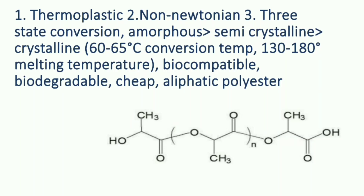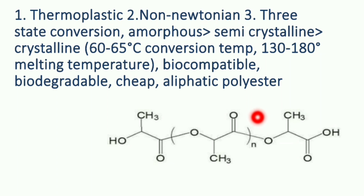We are going to learn about polylactic acid. Polylactic acid is a polyester. Before beginning the production processes as well as the applications, we have to first understand the properties of polylactic acid. As you can see from the screen, this is the structure of polylactic acid. It has an aliphatic structure and is famously known as a thermoplastic.